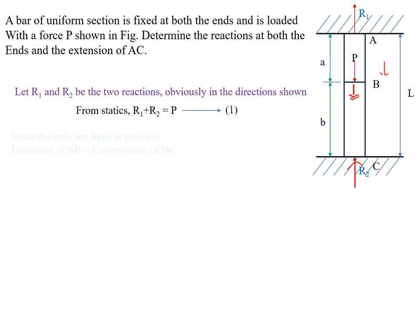Since the section is fixed at both ends, there is no net deformation in the member. Due to the fixed supports, the extension of member AB must equal the compression of member BC. Let us now see how extension occurs in AB and compression occurs in BC.